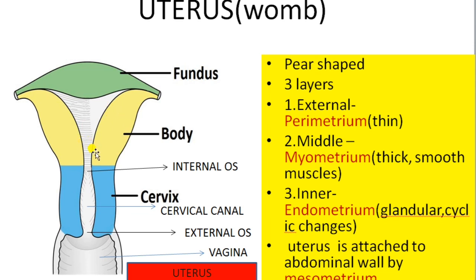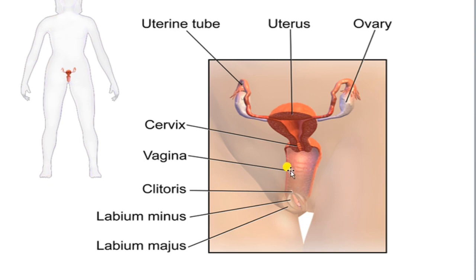The uterus is situated between the bladder and the rectum. The uterus opens into the vagina by the external os. The vagina is a large median fibromuscular tube that extends from the cervix to the vestibule of the external genitalia. The vagina is highly vascular and opens into the vestibule through a vaginal orifice. The inner wall of the vagina contains non-keratinized stratified squamous epithelial tissue.